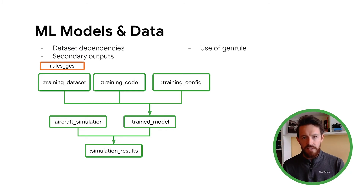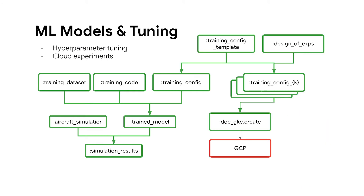We also have to be careful about data sets because they may not fit on the developer machine, which is why we developed some rules around Google Cloud Storage. Once you have this setup, you can go further and do what we call hyperparameter tuning — exploring a very large number of config parameters for the training process. We represent this in the Bazel graph as a training configuration template, a templated YAML file, and a design of experiments representing how you want to explore the parameter space.